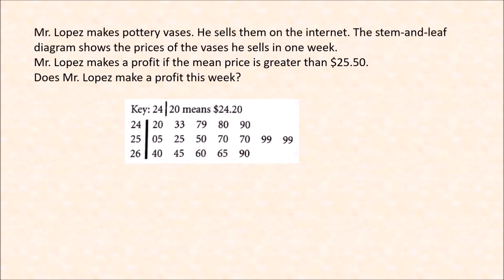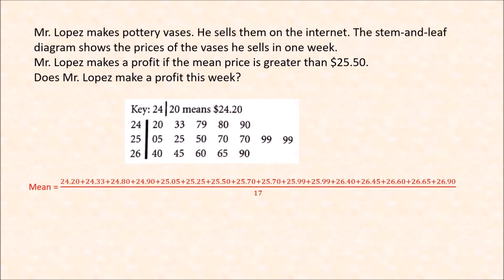If you count, there are 17 data points here — 17 different prices in one week. So let's get the mean. As the key here indicates, 24|20 means $24.20. So the first data point is $24.20, $24.33, $24.79. We add all those and then divide by 17 because there are 17 data points. That gives us $435.20 divided by 17, which gives us $25.60.